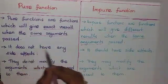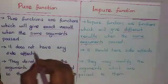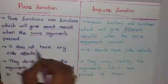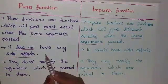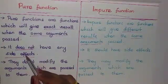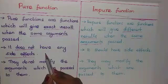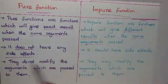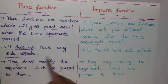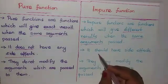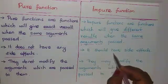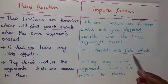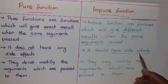A pure function does not have any side effects, which means it should not depend on any external variable. It cannot depend on an outside variable. In contrast, an impure function has side effects because it depends on an outside variable.